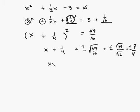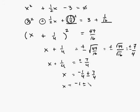So now you have x plus 1 fourth equals plus or minus 7 fourths. Then move the 1 fourth to the other side. Subtract it, and you get x equals negative 1 fourth plus or minus 7 fourths, which equals negative 1 plus or minus 7 all over 4.